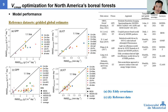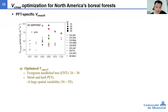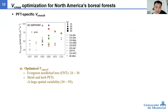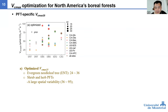VCMAX is very important for the Farquhar photosynthesis model, and many studies have investigated its spatial variation across different biomes globally. As I mentioned, measurements at the boreal biome are still limited. We found interesting results — for example, for needle-leaf evergreen trees, the optimized VCMAX is smaller than the value currently used in the model. This would be responsible for the overestimation of GPP at many sites.